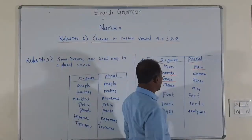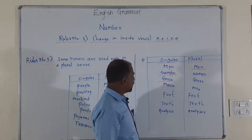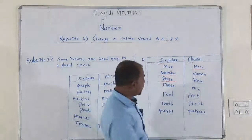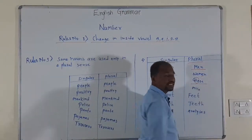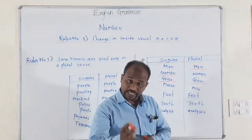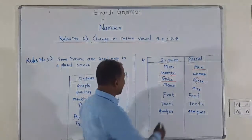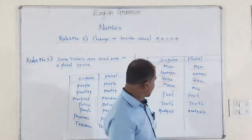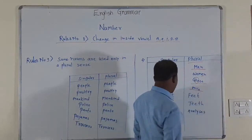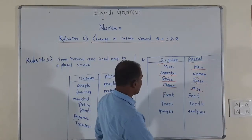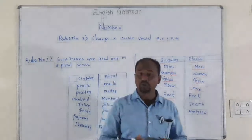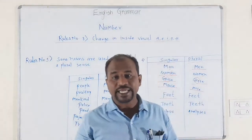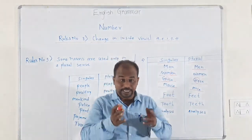Then goose — G, double O, S, E — we remove the double O and use double E in the plural form: geese. Then mouse — M, O, U, S, E — becomes mice. Then foot — F, double O, T — we remove the double O and use double E, giving us feet.